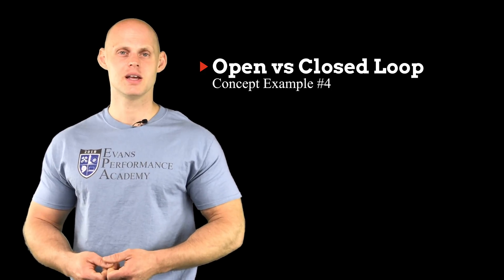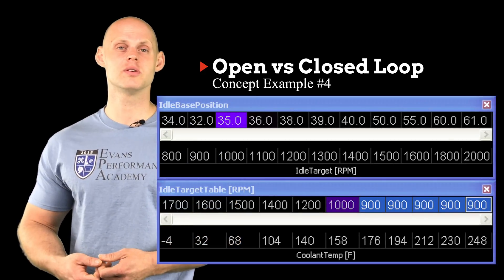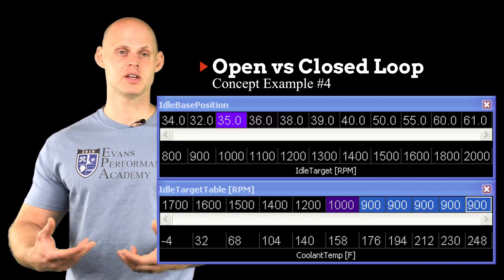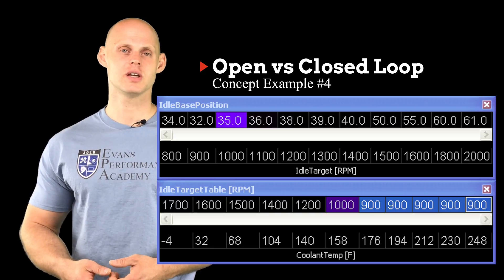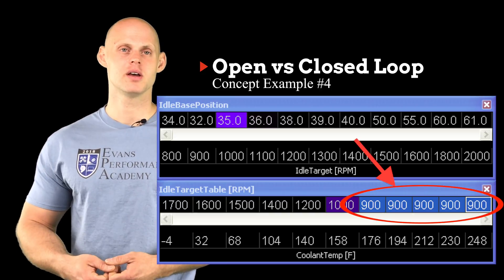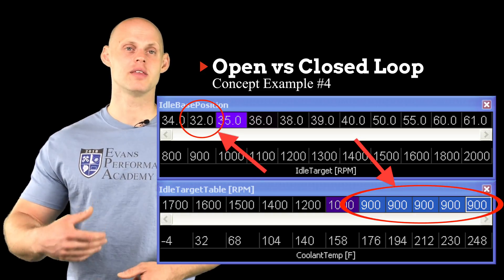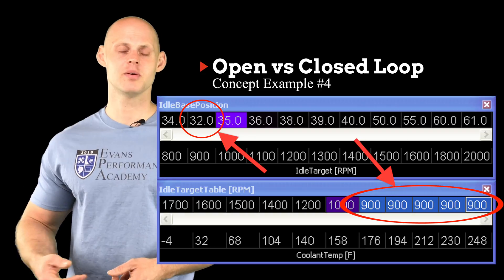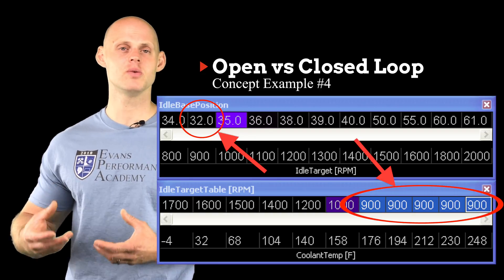In an open loop style idle control, we simply have a basic table with a percentage output associated with a particular idle speed. So if we want to run 900 RPM, it's going to look at this lookup value and output that particular value — it looks up 900 RPM in the table and spits out the value, and that's what it's going to run.